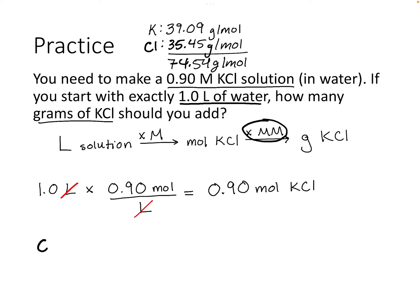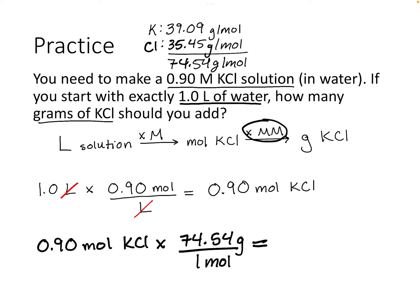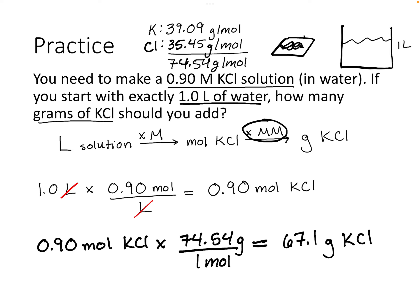Multiplying 0.9 moles of KCl by its molar mass of 74.54 g/mol gives us 67.1 grams of potassium chloride. So to make this solution, we weigh out 67.1 grams of KCl, add it to one liter of water, mix it, and the concentration of that solution will be 0.9 moles per liter.